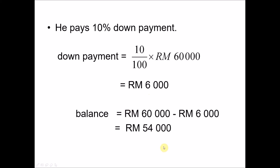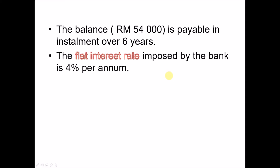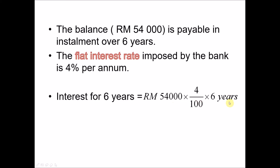To find this large amount of money, he needs to loan from the bank. The balance of fifty-four thousand will be repaid in installments over six years. The bank charges a flat interest rate of four percent per annum. The interest for six years is calculated as P × R × T: fifty-four thousand times four over one hundred times six, giving an interest charge of twelve thousand nine hundred and sixty ringgit.